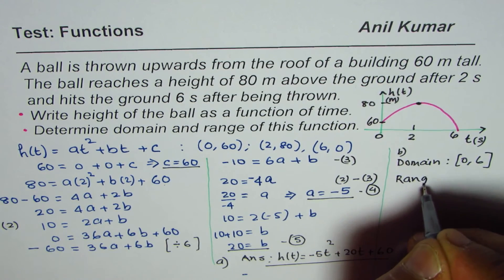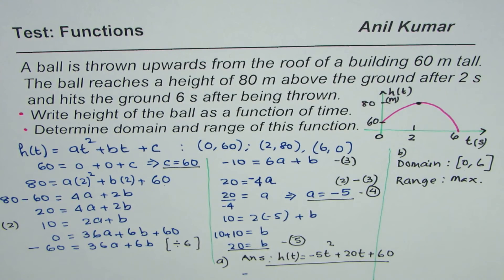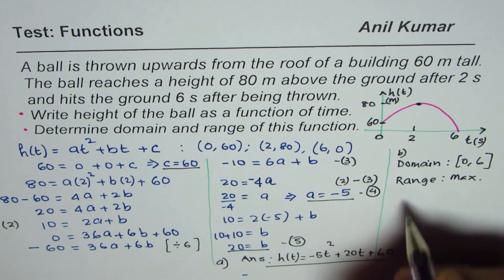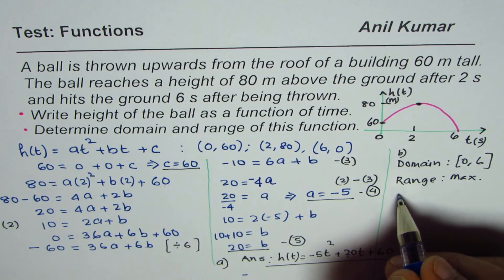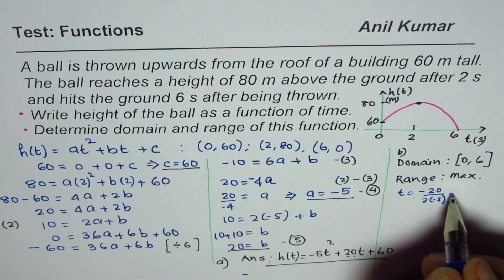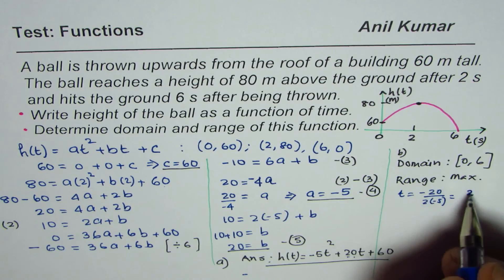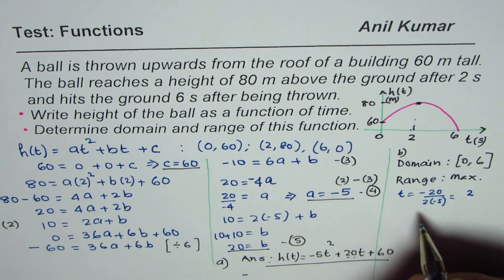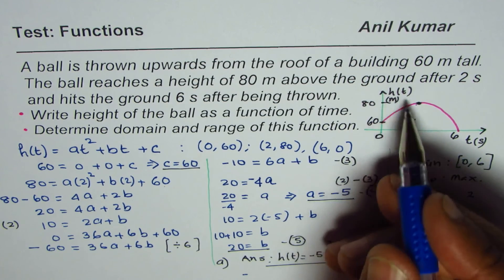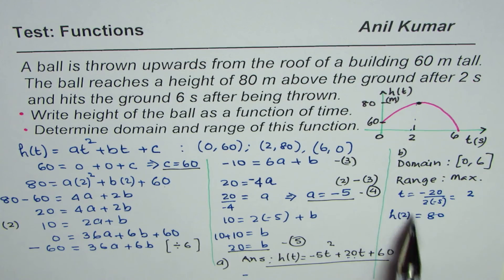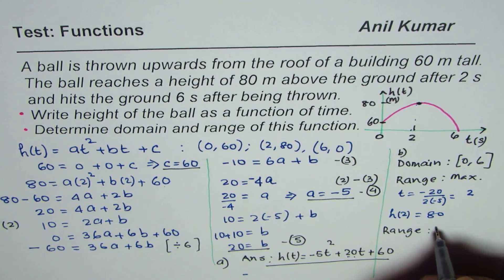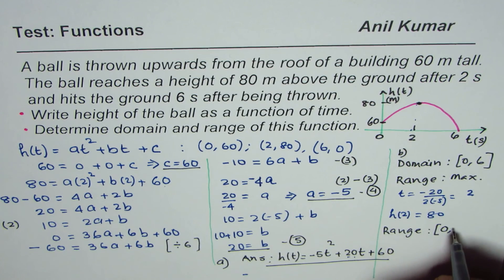To find the range we need the maximum. For a quadratic, the maximum occurs at t = −b/(2a) = −20 / (2 × −5) = 2. Fortunately, we already know h(2) = 80. So the range is from 0 to 80.